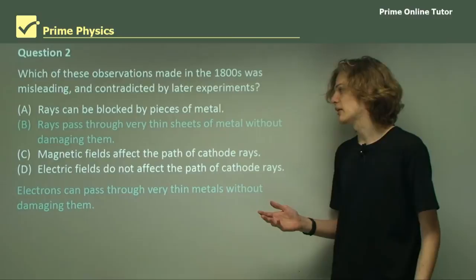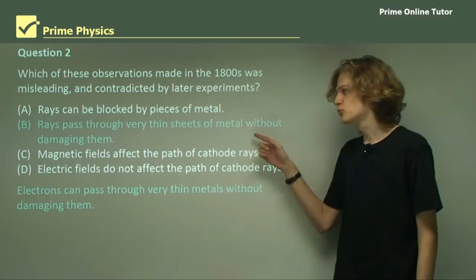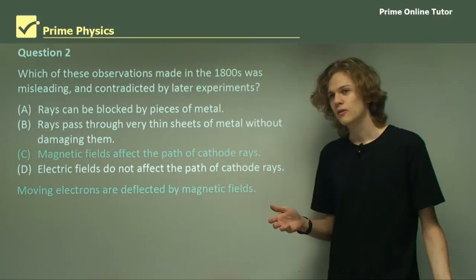B. Rays pass through very thin sheets of metal without damaging them. Now, the scientists of the day couldn't explain this. But in fact, electrons can pass through very thin sheets of metal without damaging them. So this was never contradicted.